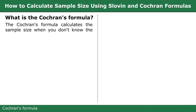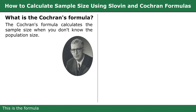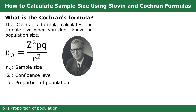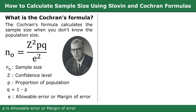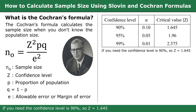Cochran formula. The Cochran formula calculates the sample size when you don't know the population size. This is the formula. n₀ is sample size, Z is confidence level, P is proportion of population, Q equals 1 minus P, and E is allowable error or margin of error. This is the table of confidence levels: if you need the confidence level to be 90%, Z equals 1.645. If you need the confidence level to be 99%, Z equals 2.575.